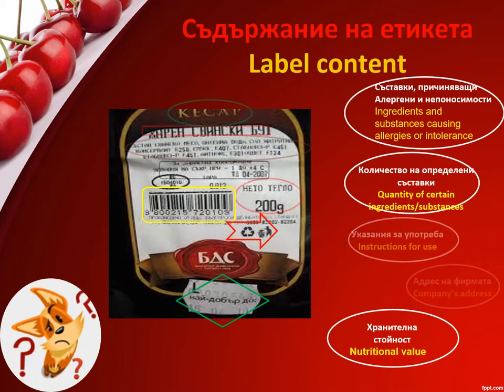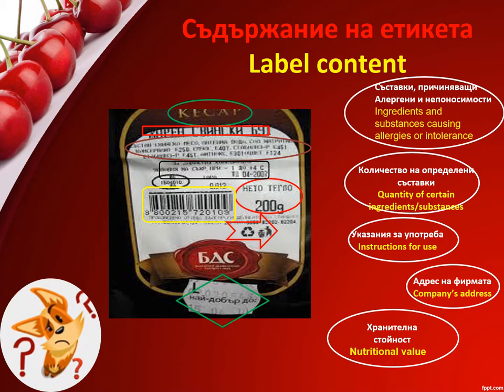Content of the Label: According to the regulation of the Food Safety Ordinance, each label must contain 12 components. The first is the name of the food, accompanied by its physical state or specific processing — for example, refrozen, smoked, powdered, thawed, unfrozen, irradiated, etc.